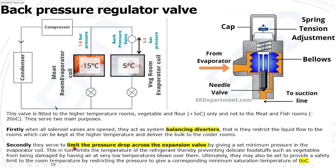Secondly, it serves to limit the pressure drop across the expansion valve, or to define a minimum saturation temperature at the evaporator — normally 0 degrees Celsius. These are the two main purposes of the back pressure regulating valve. I hope you have understood what the back pressure valve is, its application, and how it is set. Stay tuned and I will be explaining refrigerants and other parts, as well as air conditioning, in my next videos. Thank you.